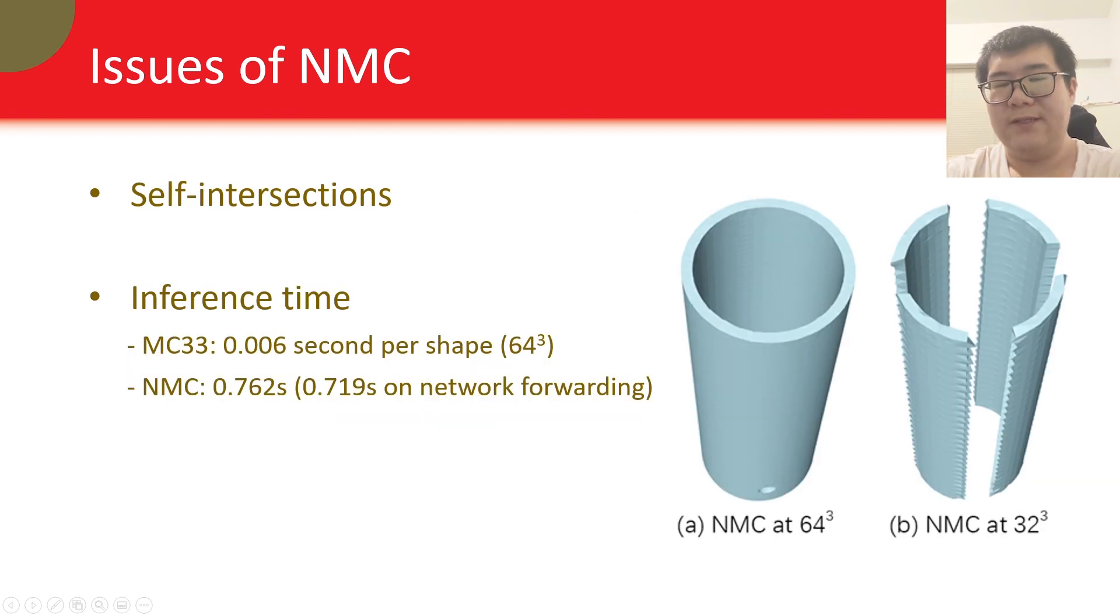Third, NMC does not have a mechanism to avoid self-intersections. They usually appear in the cubes that cannot be represented by NMC. For example, if you zoom in this part, there are plenty of self-intersections. Finally, the inference speed of NMC is far from real-time, with most of the time spent on network forwarding, because we have a huge network working on 3D grids.